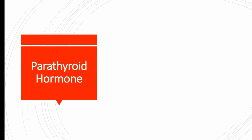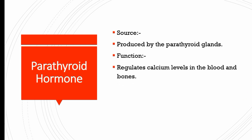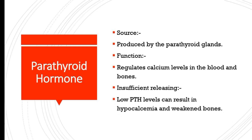Parathyroid hormone is produced by the parathyroid glands. Its function is to regulate calcium levels in the blood and bones, and that is why it plays an important role in bone health. Low parathyroid hormone levels can result in hypocalcemia and weakened bones.